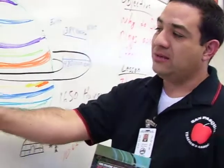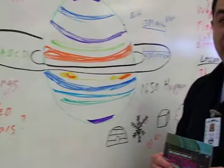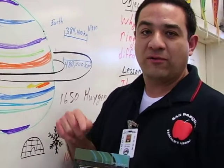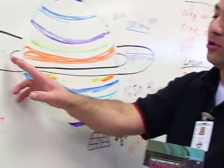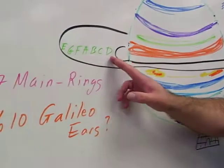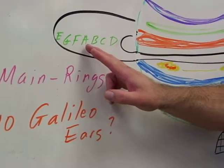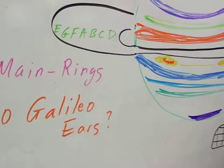We now know that there are seven rings, and they're named A, B, C, D, E, F, and G. However, they were named in the order they were found. So the closest ring to the planet is D, followed by C, B, A, which would have been the first one to be identified, F, G, and E.